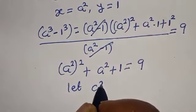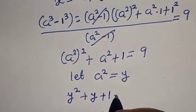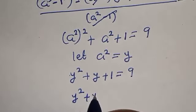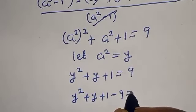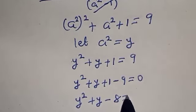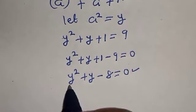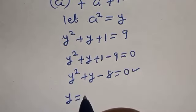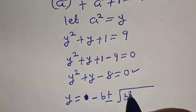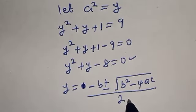Let a squared equal y. We have y squared plus y plus 1 is equal to 9, which gives y squared plus y plus 1 minus 9 equals 0, so y squared plus y minus 8 equals 0. This is a quadratic equation which can be solved using the quadratic formula, given as y equals negative b plus or minus square root of b squared minus 4ac, all over 2a.